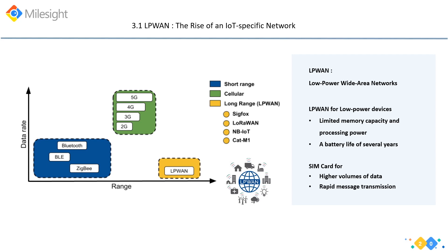LPWAN is not suitable for all applications. It is intended for low-power devices with limited memory capacity and processing power, which require a battery life of several years. If you need higher volumes of data and rapid message transmission, then other technologies such as 3G, 4G, or 5G cellular-based connections are a better solution.